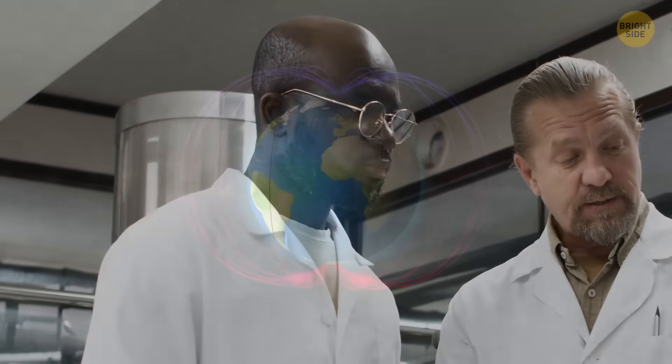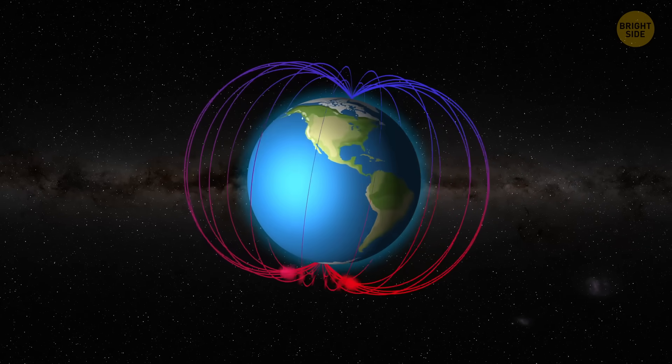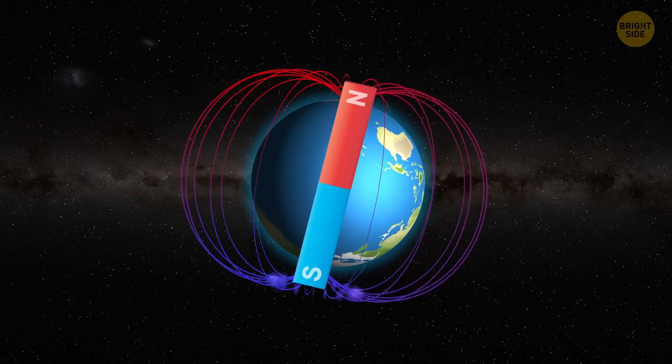No one knows exactly what's going on yet, but scientists think the SAA might be a clue that Earth's magnetic field is shifting. If that's true, it could mean big changes for the future, for us all.